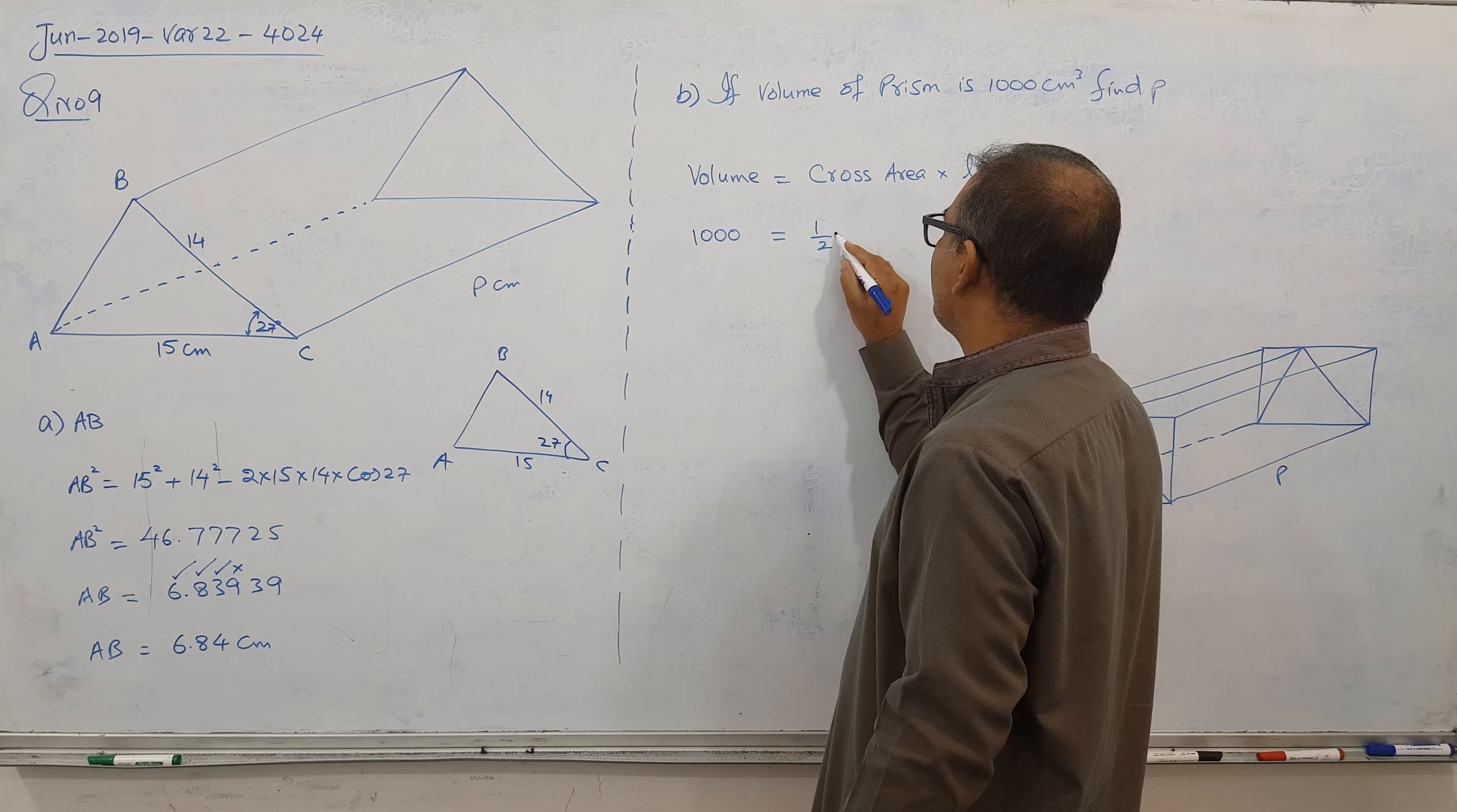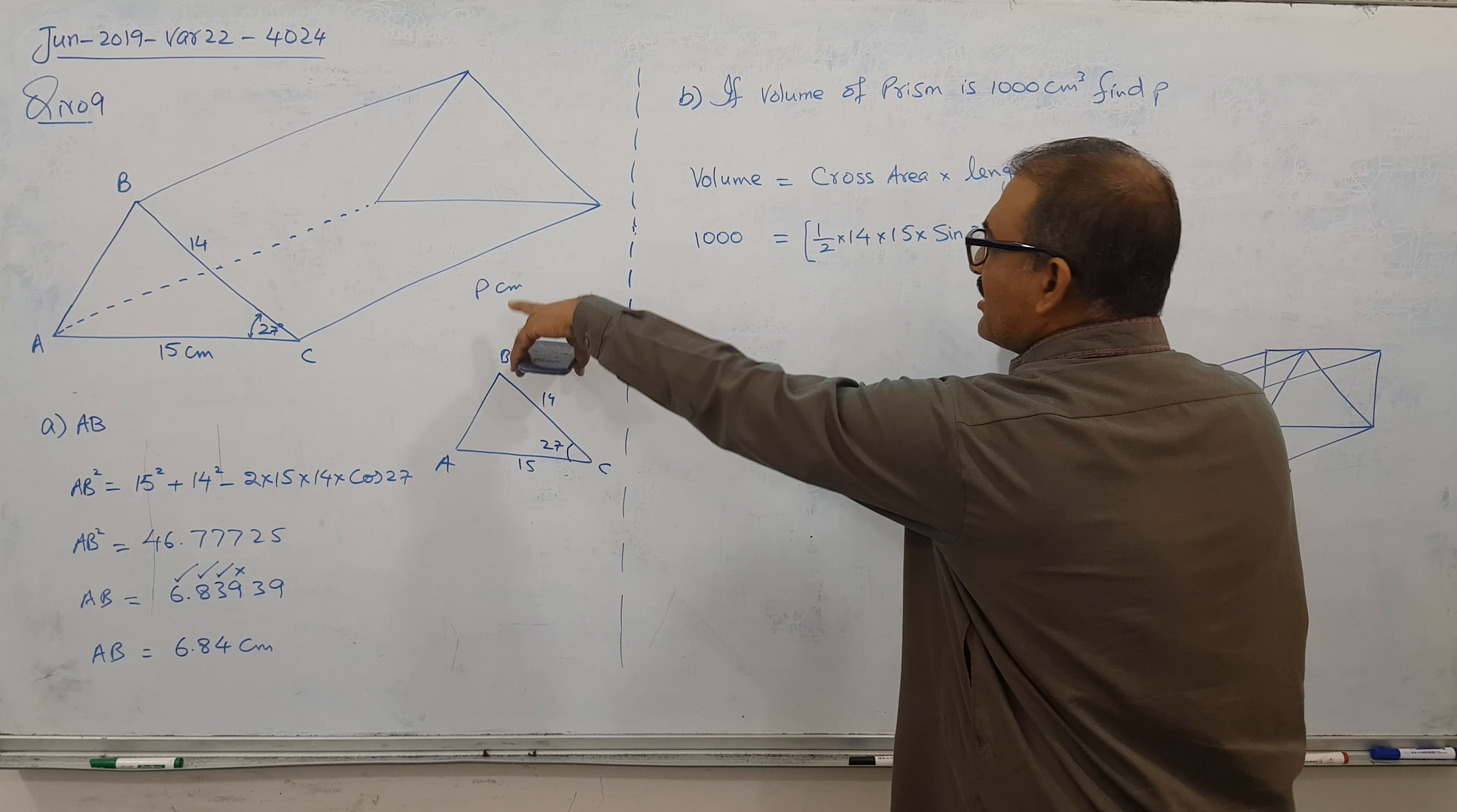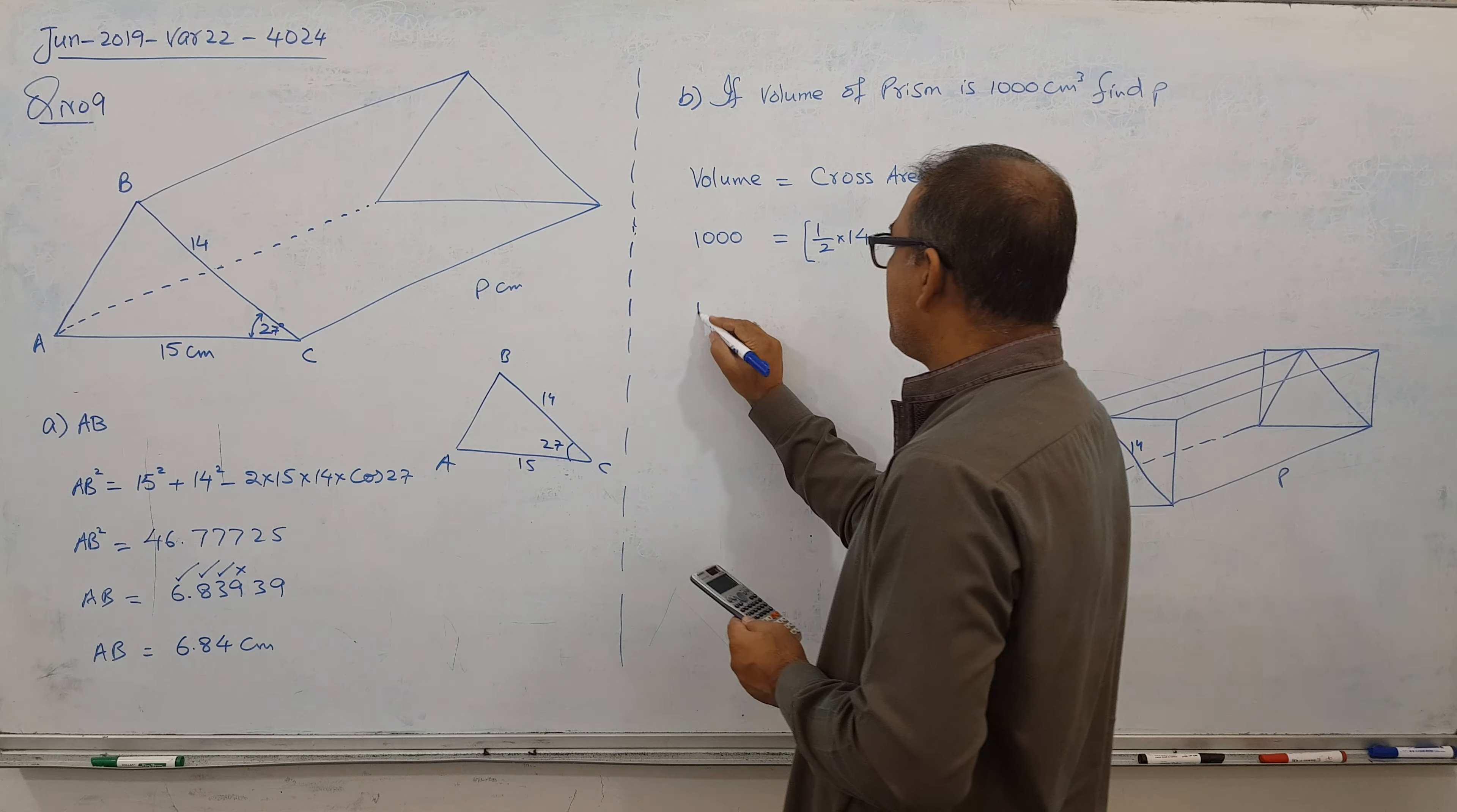Because triangle area is half into A into B into sine theta. This is cross-sectional area, and times the length is P. So let's type it. Half into 14 into 15 into sine 27. Don't type cos, sine here.